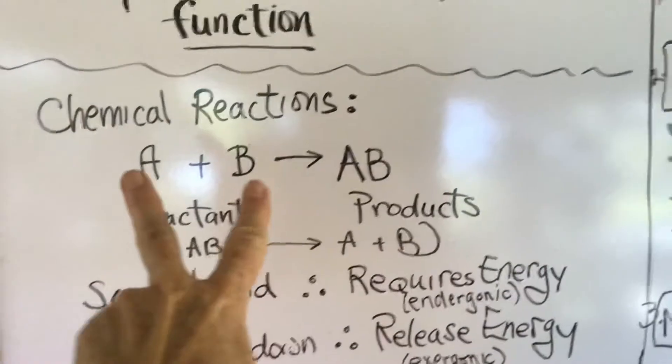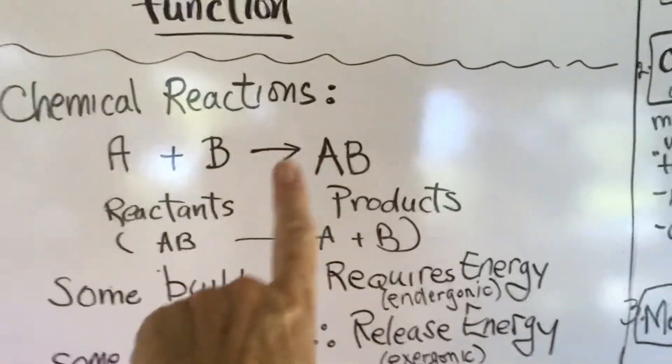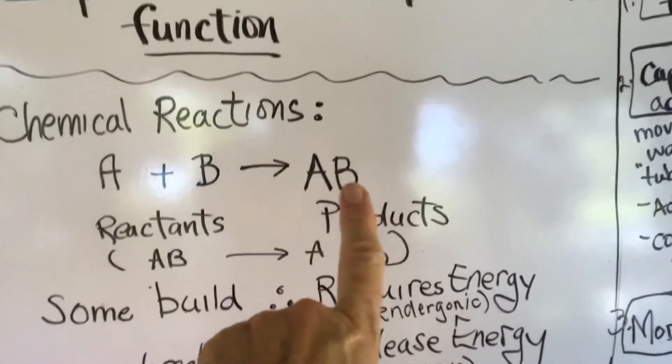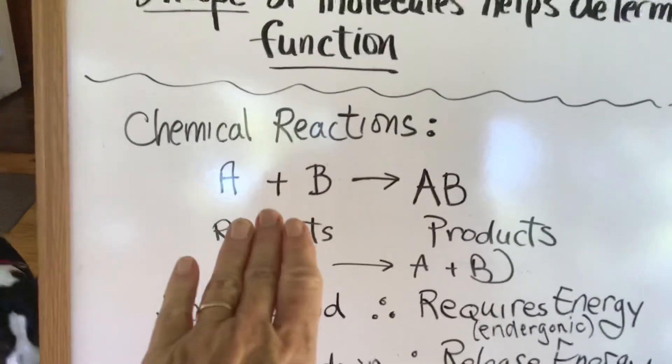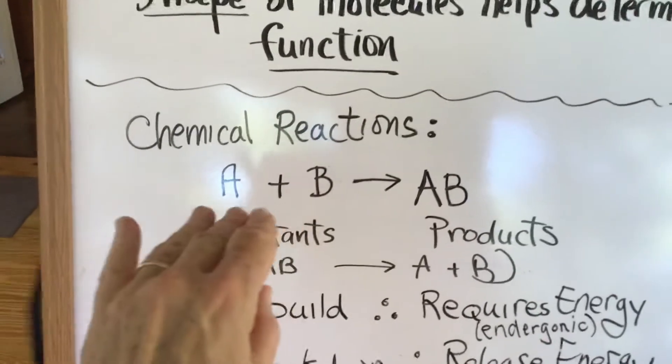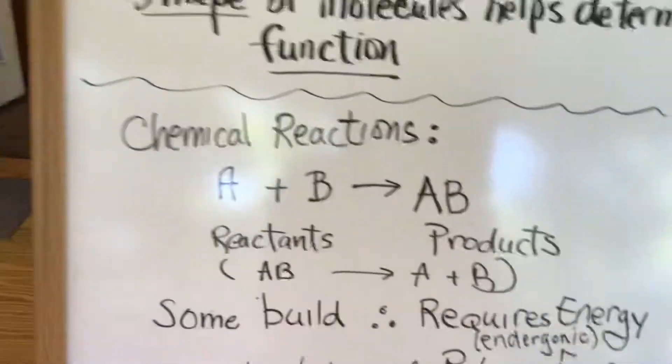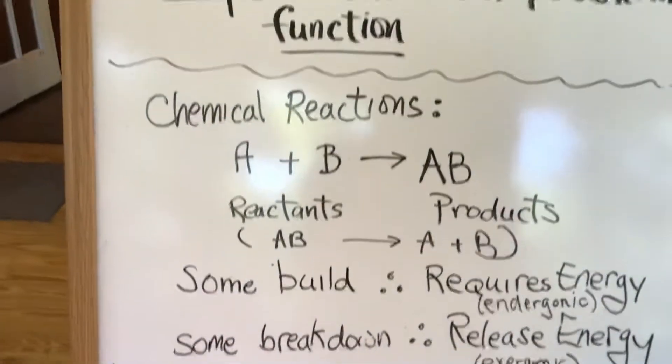You can see here, this is A + B equals AB. Just like a mathematical equation, this can also go the other way. But in biological systems, it's often going to be just going in one direction, or in one direction predominantly.